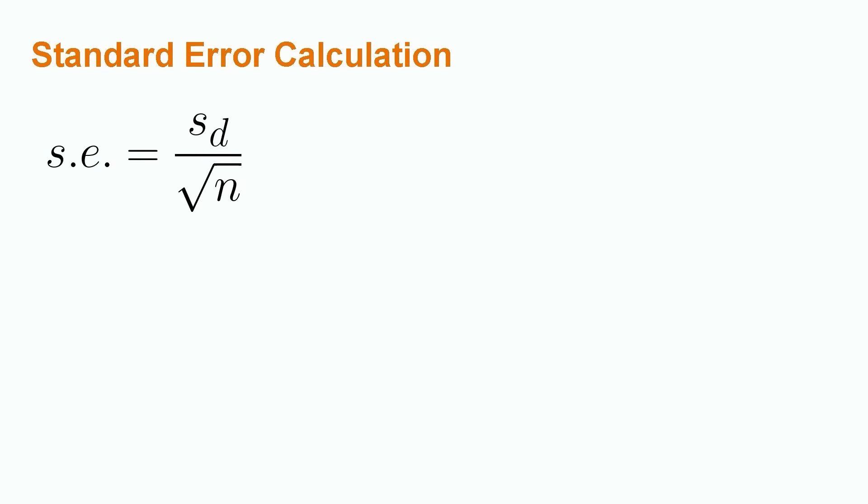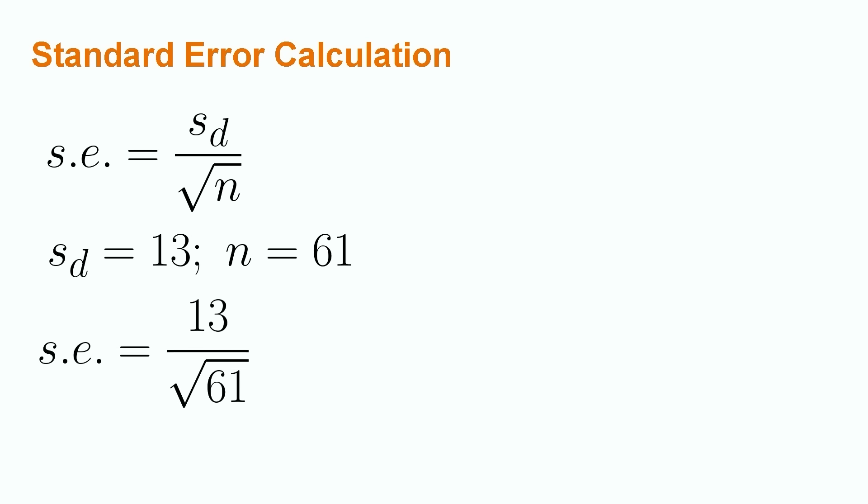To calculate our standard error, we recall that the standard error is equal to the standard deviation of the sample differences divided by the square root of the sample size, or s_d over the square root of n. Our data has a standard deviation of differences equal to 13 and a sample size of 61. Plugging these values into our equation, we have that the standard error is equal to 13 divided by the square root of 61, or about 1.66.